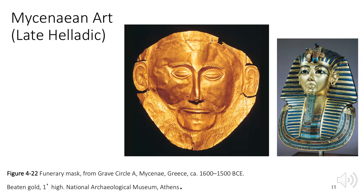Mycenae used the technique of repoussé to fashion metal. In this technique, a thin sheet of metal is hammered into the desired shape. This is a funerary mask found in a royal shaft grave — it is one of the first attempts at life sculpture in Greece. It is interesting to compare this work with Egyptian portraiture. Keep in mind the Mycenaean metal worker was one of the first in Greece to produce a sculpted image of a human face, whereas the Tutankhamun mask stands in a long line of Egyptian sculpture.